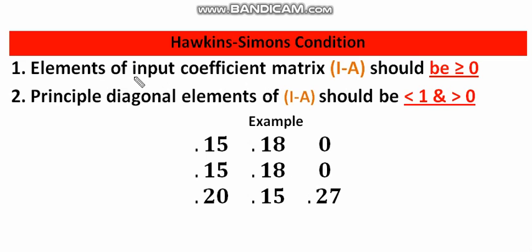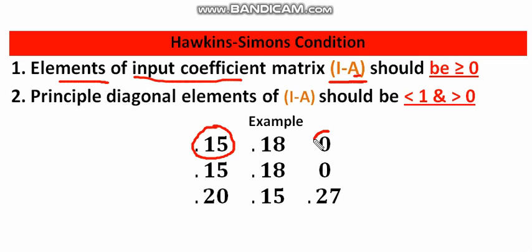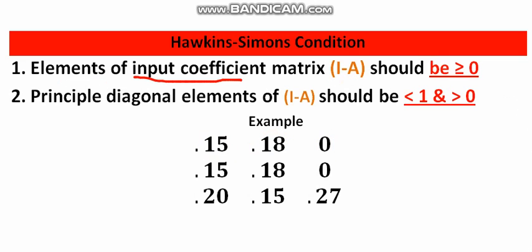The first condition states that the elements of the input coefficient matrix, or when we find the (I-A) matrix from the input coefficient matrix — your A matrix — in order to find out the gross output or final demand in input-output analysis, all the elements of the (I-A) matrix should be greater than or equal to zero. That is the first condition required for the system to remain viable according to the Hawkins-Simons condition.